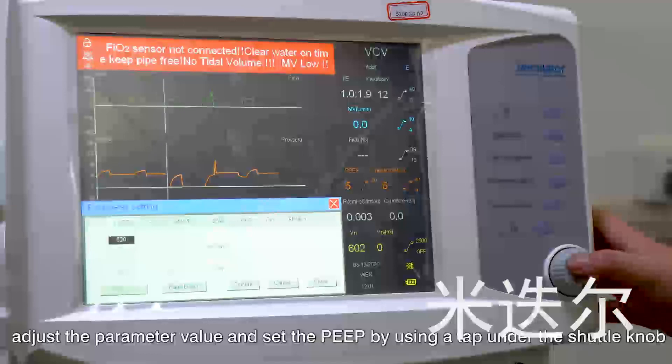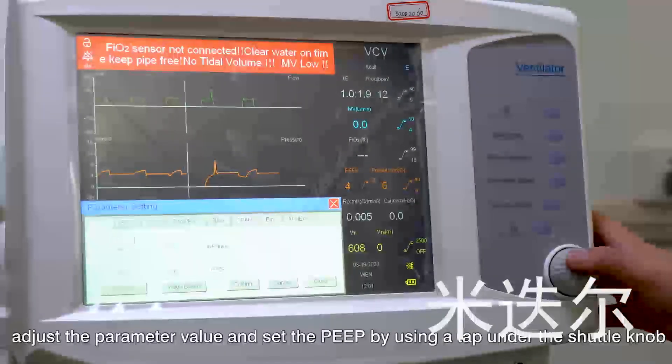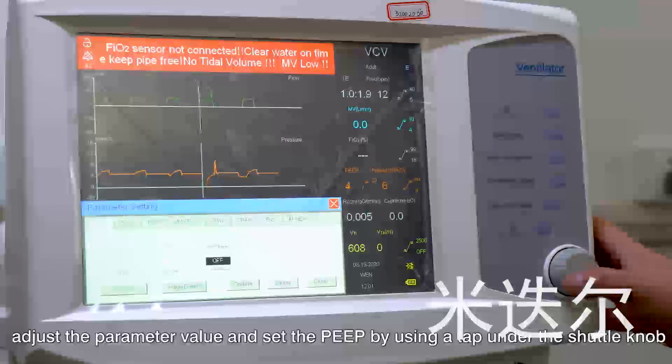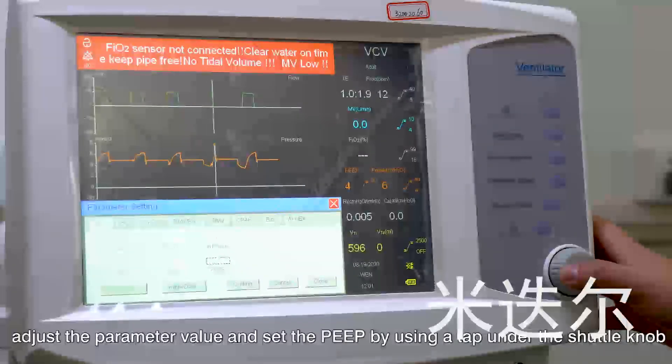Adjust the parameter value and set the PIP by using a tab under the shooter knob.